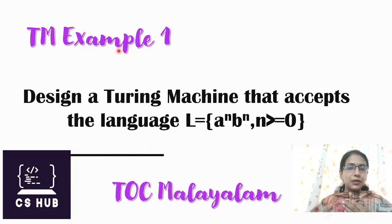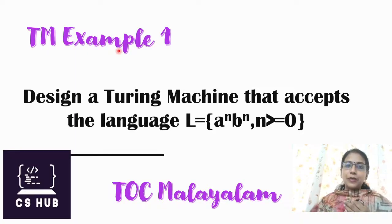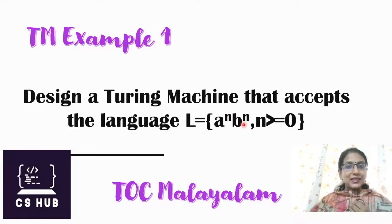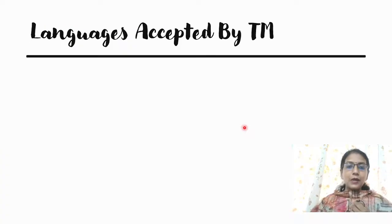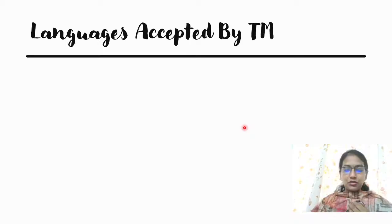The question is: design a Turing machine that accepts the language L = a^n b^n, where n is greater than or equal to 0. This language is what we have to accept using a Turing machine in this session. So how do we know how to do it?